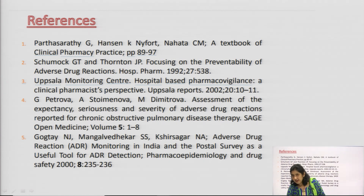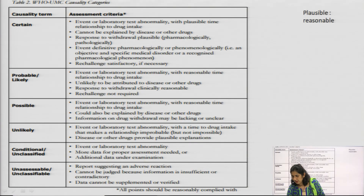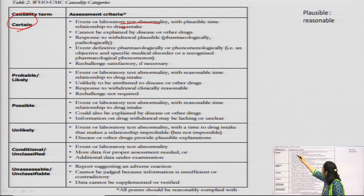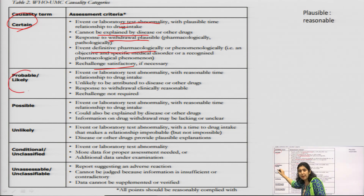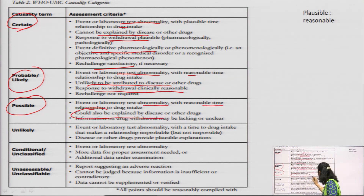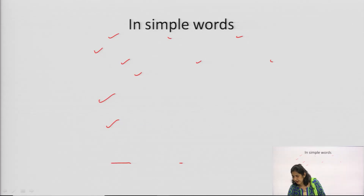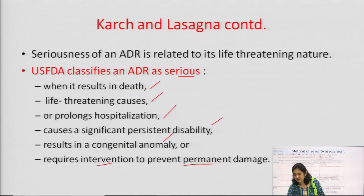To summarize the Naranjo scale categories: Certain — abnormal timing, event cannot be explained by disease, responsive to withdrawal, pharmacologically plausible, re-challenge satisfactory. Probable — event with abnormal timing, time relationship present, unlikely to be attributed to disease, reasonable response to withdrawal. Possible — event with reasonable time relationship but could also be explained by disease or other drugs. Unlikely — event with a time-to-drug relationship that makes the relationship improbable. Also: conditional and unclassifiable categories exist.